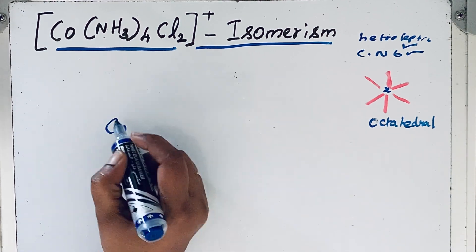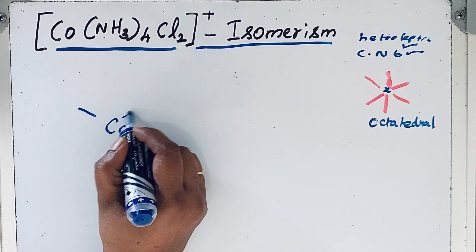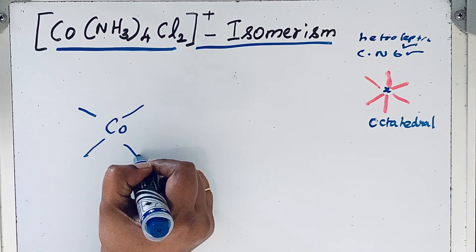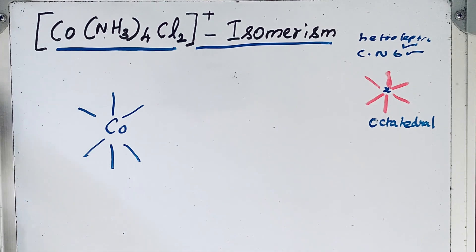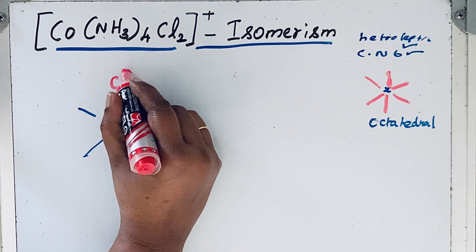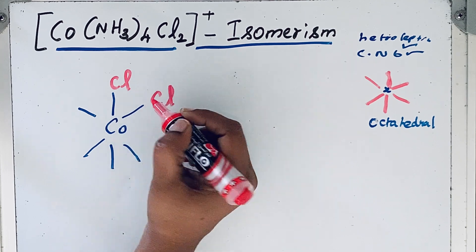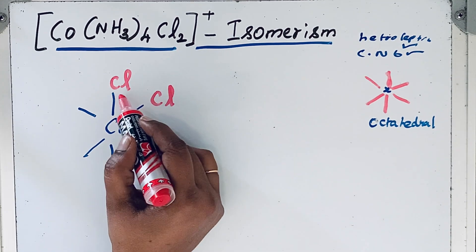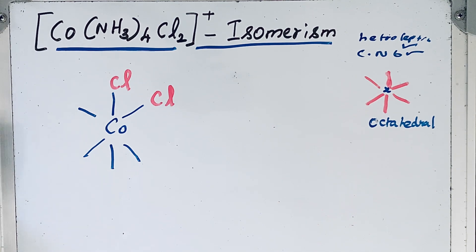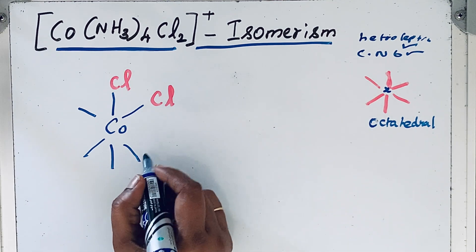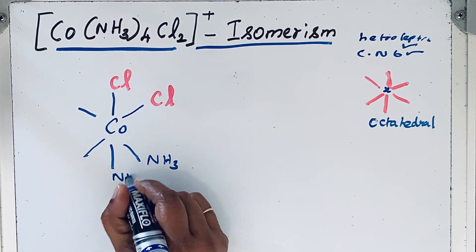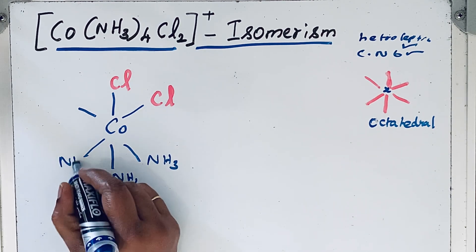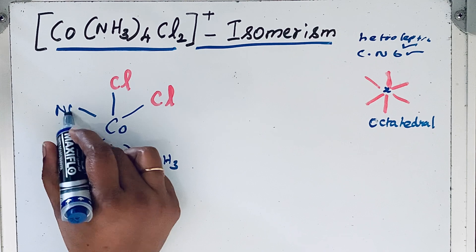Cobalt, then after this. So first let us show the Cl group: Cl and then here Cl. So here the Cl groups are adjacent to each other. Then remaining all other sides we can attach the NH3 groups: NH3, NH3, NH3, NH3.